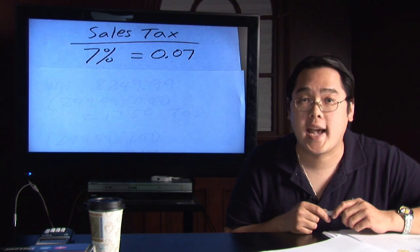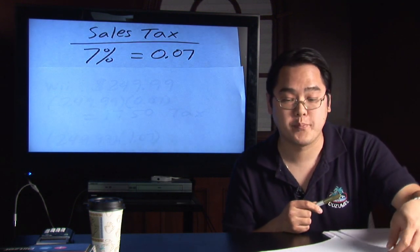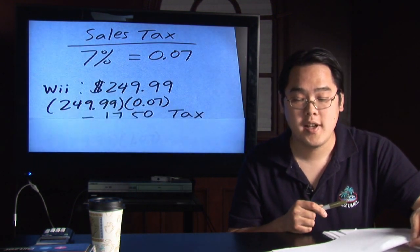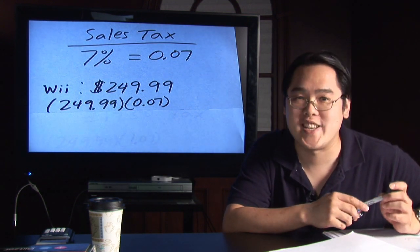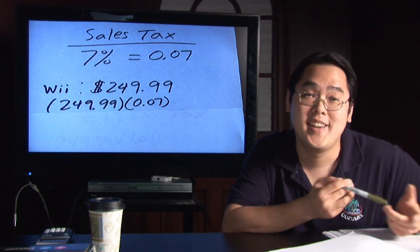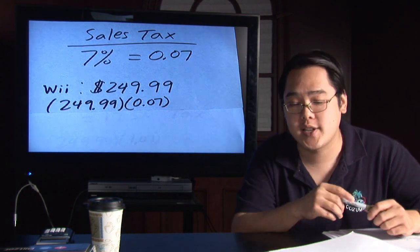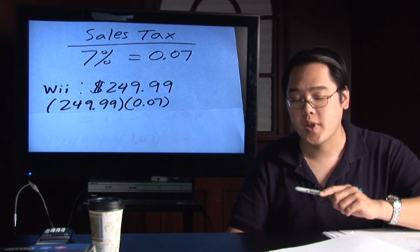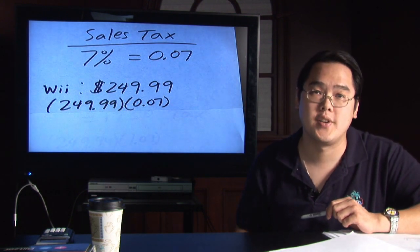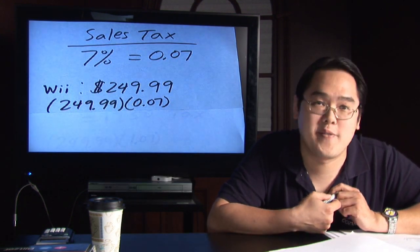Here's an example on how to calculate how much sales tax you're paying. The much sought after Nintendo Wii cost $249.99 retail. To figure out how much tax you'll be paying under the 7% sales tax, you simply take how much the Wii is worth, $249.99, and multiply it by 0.07.